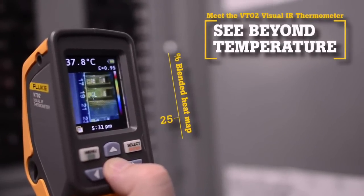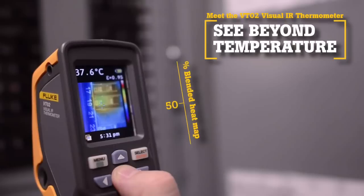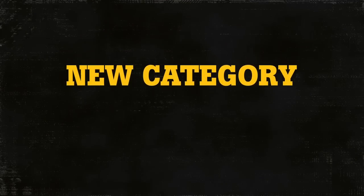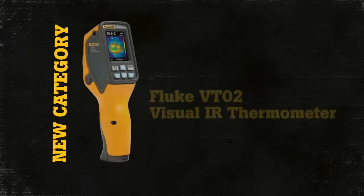The Fluke VT02 Visual IR Thermometer revolutionizes temperature measurements with thermal blending. Now there is a new tool category, Visual IR Thermometers.